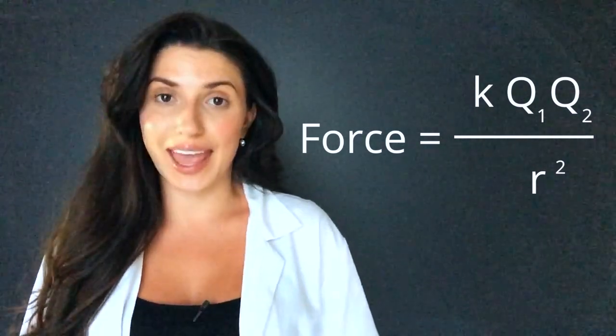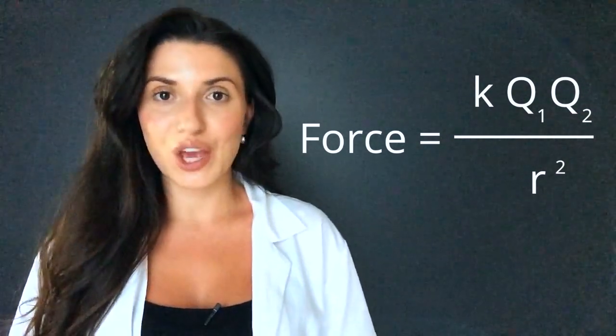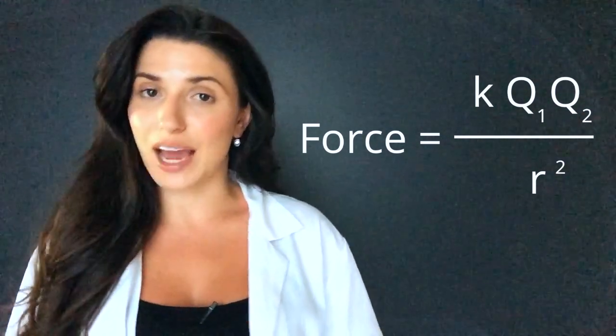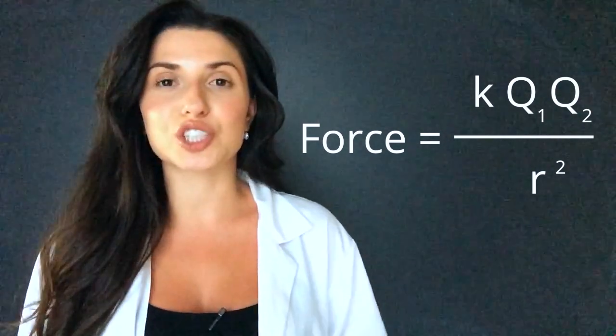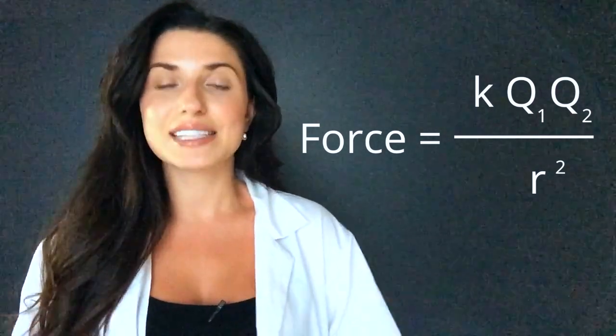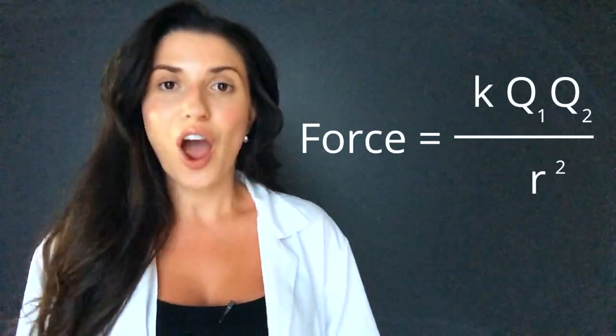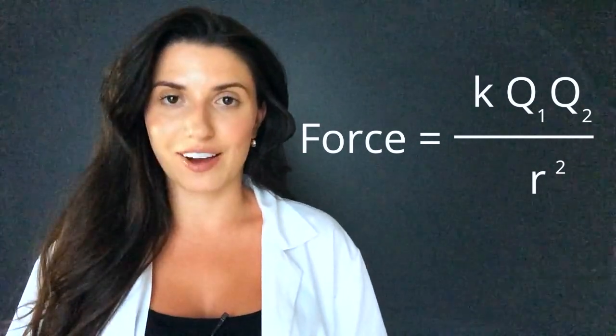Coulomb's Law is the magnitude of attractive forces between anions and cations. The equation is force equals k, which is Coulomb's constant, times Q1 and times Q2, which are the charges of two ions, divided by r squared. r stands for the distance between ions.